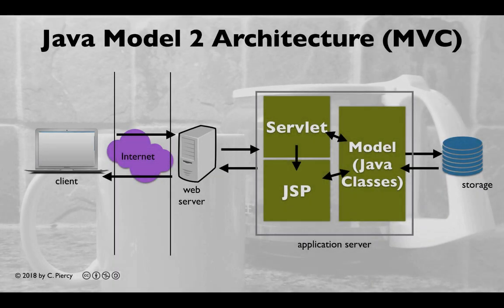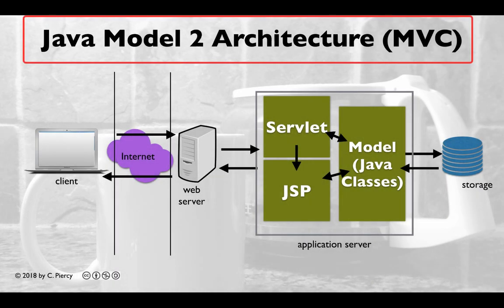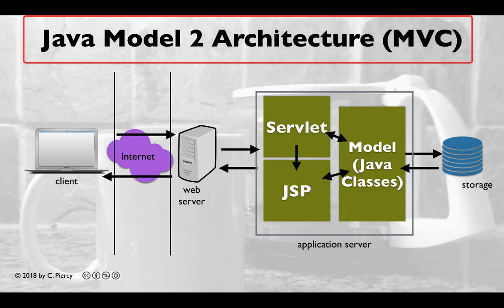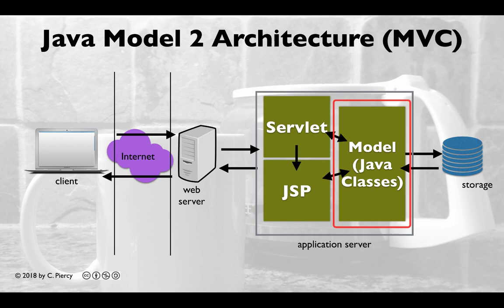When we need more processing power, we'll use the Java Model 2 architecture. Java Model 2 architecture follows the more general Model View Controller pattern. This pattern is used when we need more significant processing on the server side. The separation of concerns that is inherent in the MVC pattern makes these types of applications easier to create and maintain. With the MVC pattern, the model consists of business objects. In the Java world, the model is usually a collection of Java classes.